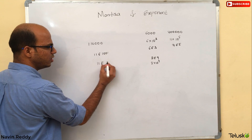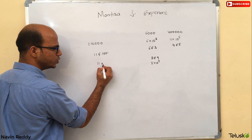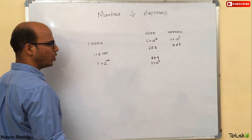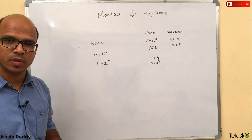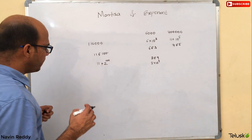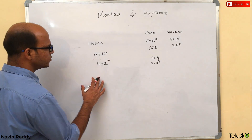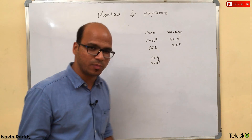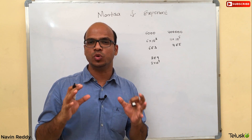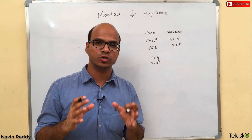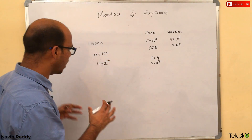So we can represent this number as 11 into 2 raised to 100. You will get the same number. But the question is: can you add two such numbers? In your exam, if you are given two numbers in this format and you want to add them, what do you do?